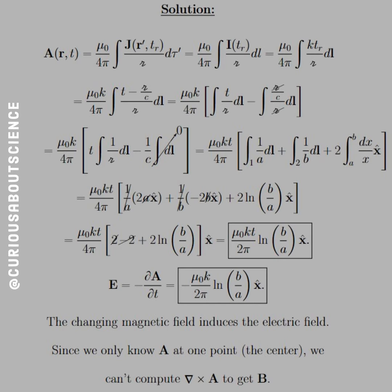The k, being a constant, gets pushed outside the integral. We know the retarded time is t minus script_r over c. At this point we split the integral, giving us μ₀k/4π outside the brackets, with the numerator t over script_r · dl, minus script_r/c divided by script_r · dl. Notice the script_r's cancel — beautiful. We're left with t times the integral of 1/r · dl, minus 1/c times the integral of dl, and that second term goes to zero.